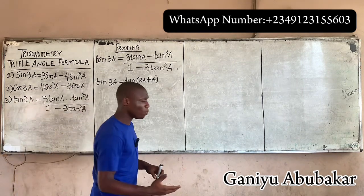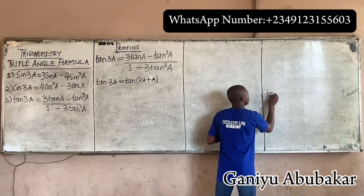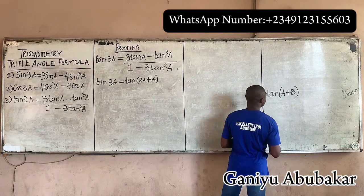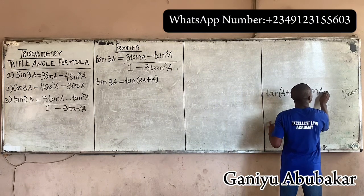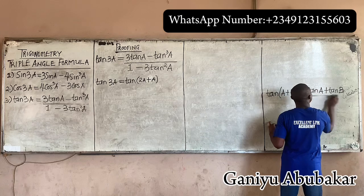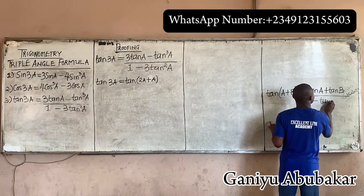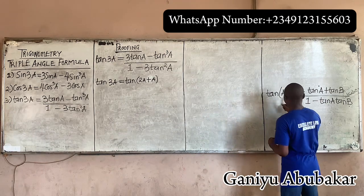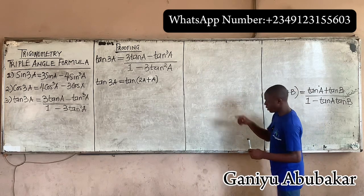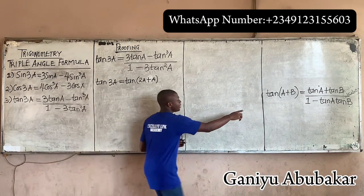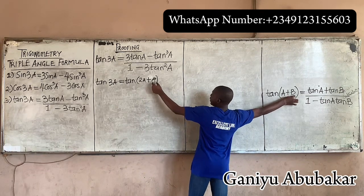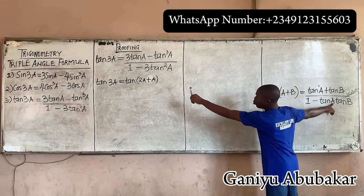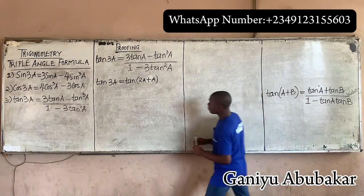Now I want to recall the concept of compound angle. From compound angle, if I have tan(a + b) — it's a plus sign — this will automatically give tan(a) plus tan(b), all over 1 minus tan(a)·tan(b). I'll use this expression here. My a becomes 2a and my b becomes just a.